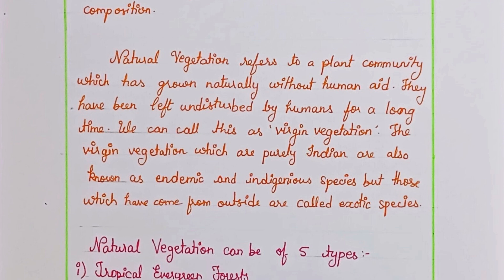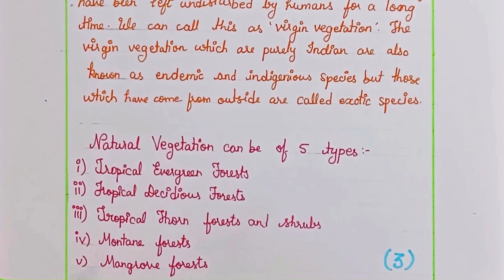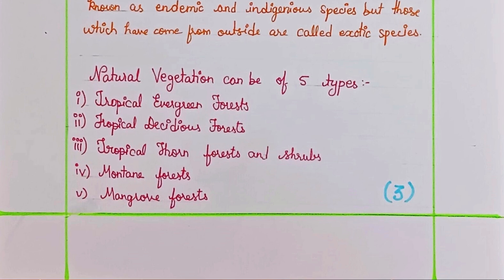The Virgin Vegetation which are purely Indian are also known as endemic and indigenous species, but those which have come from outside are called exotic species. Natural Vegetation can be of five types.